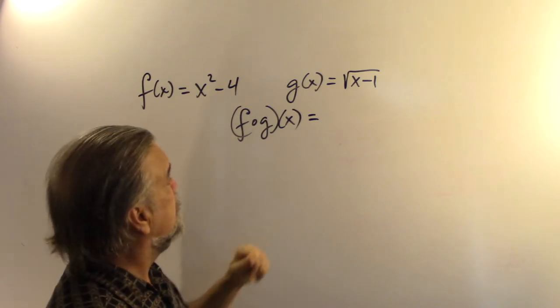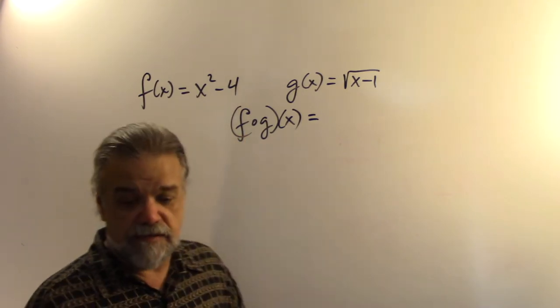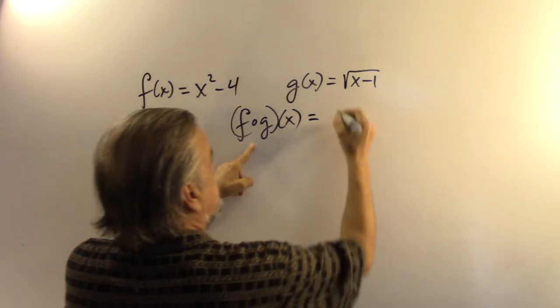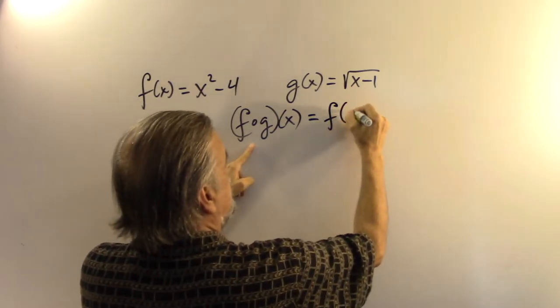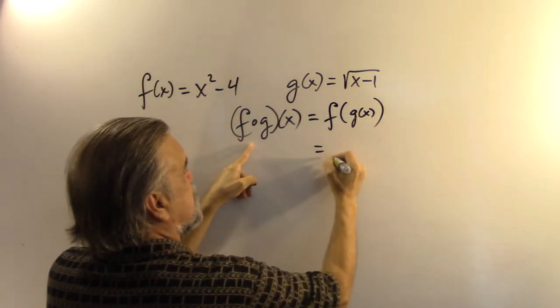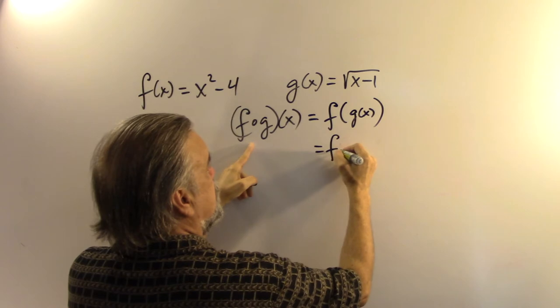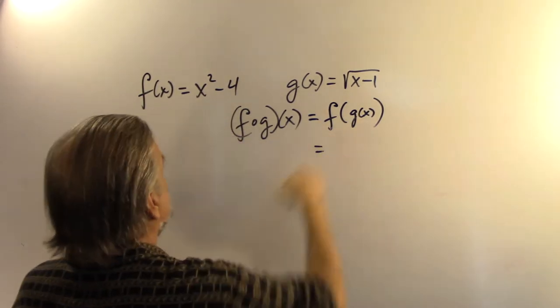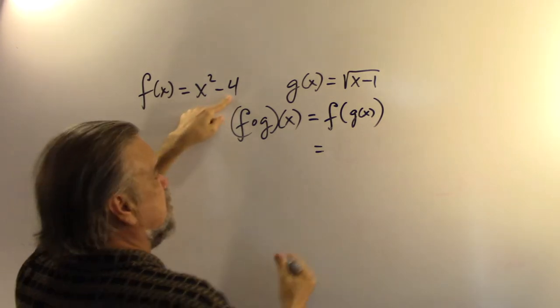And what I want to know is, what is f of g of x? Well, that means I want to find f of g of x, right? And that's going to be f of, well, what happens when I perform the function f on something? I square it and then I subtract 4.